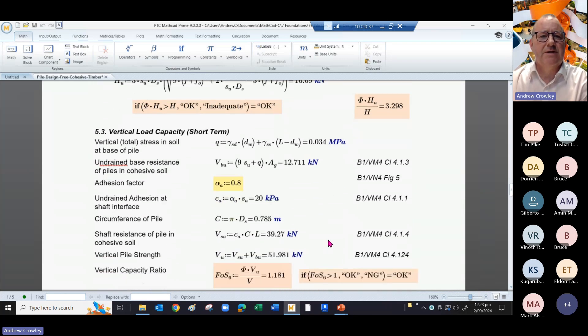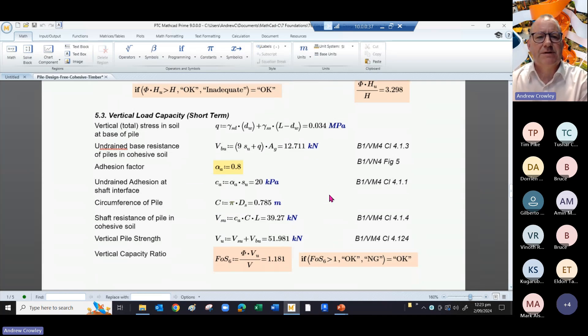Now we look at the vertical load capacity, looking at the short term first. Again, we work out what the total stress is at the base of the pile. That gives us the undrained base resistance Vbu of nearly 12 kilonewtons.